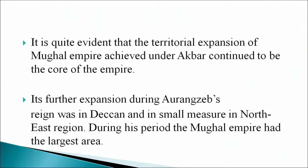In conclusion, the territorial expansion of the Mughal empire achieved under Akbar continued to be the core of the empire. Its further expansion during Aurangzeb's reign was in the Deccan and in a small measure in the northeast region. During this period the Mughal empire had the largest area. However, the beginning of the decline of the Mughal empire could also be traced to the rule of Aurangzeb — the breaking of the association with potent regional forces like the Rajputs, and the failing relationship with the Deccan states and Marathas, shook the unity and stability of the empire. Under his successors, the empire kept disintegrating.